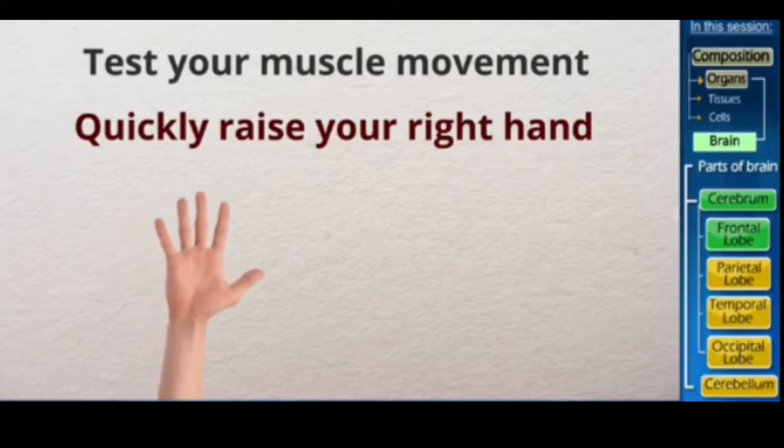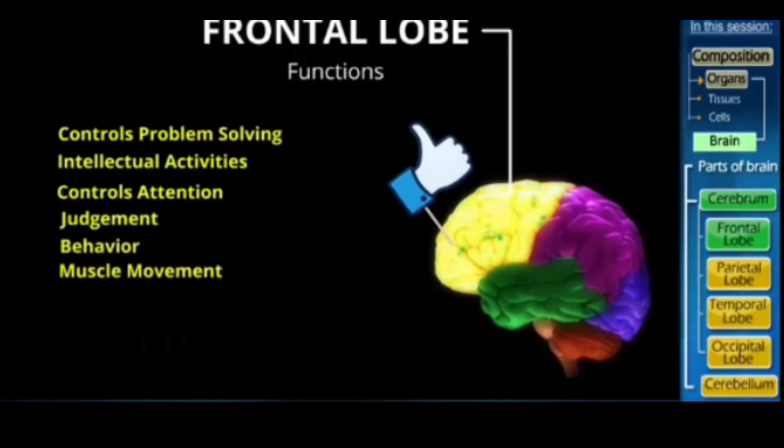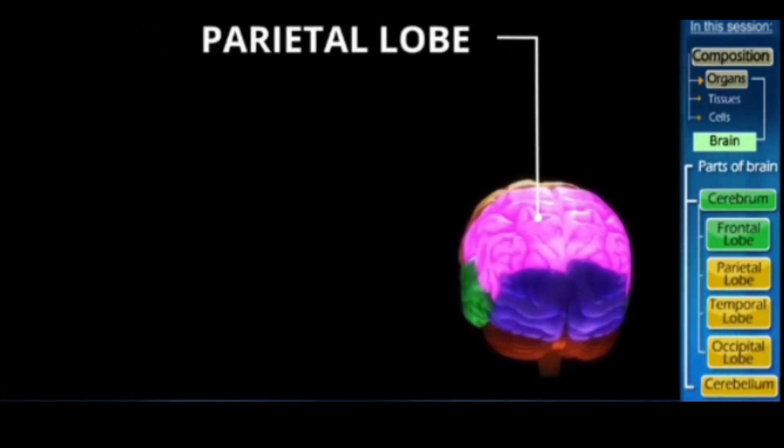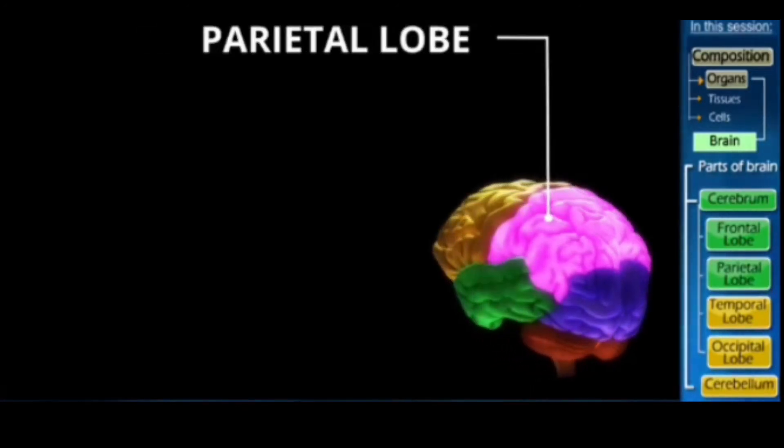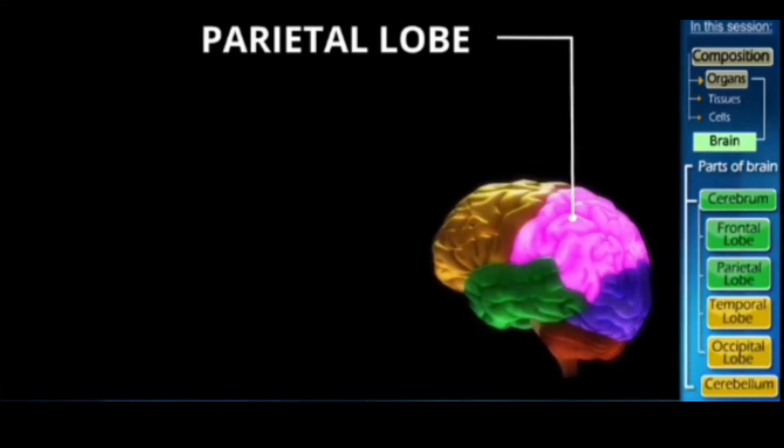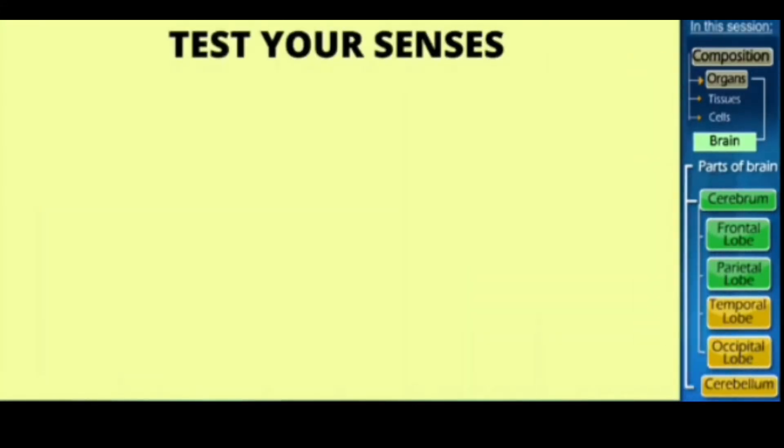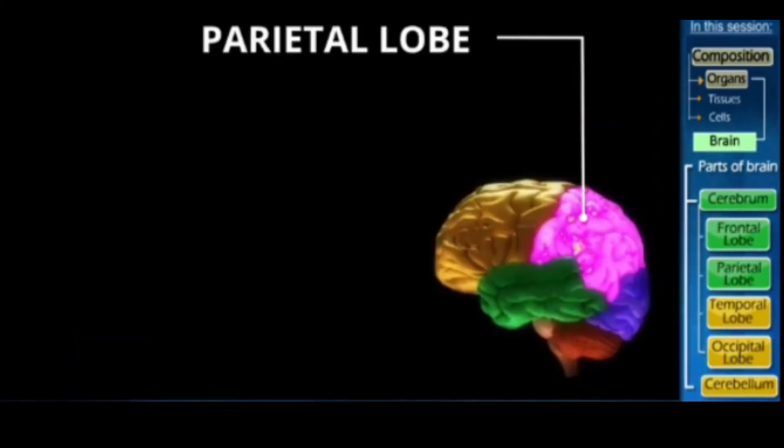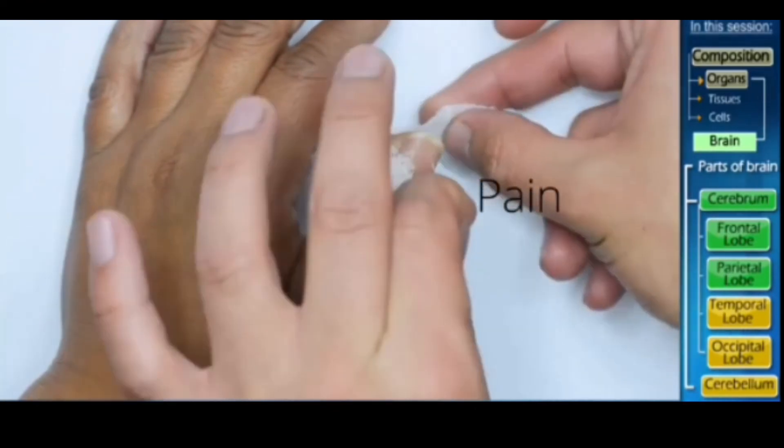Let's move to the next lobe. This highlighted lobe here is called the parietal lobe. And do you know what it controls? Wait, let's take a test to see if it functions well. So you have to do as I say, pinch yourself as hard as possible. Come on, do it quickly. Did that hurt? Did you sense any pain? So your parietal lobe senses pain.